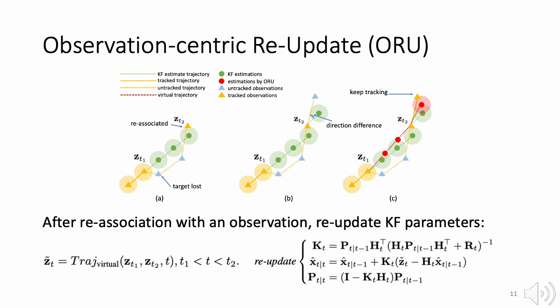To do this, ORU estimates a virtual trajectory referring to the observations at T1 and T2, shown in red dotted line.